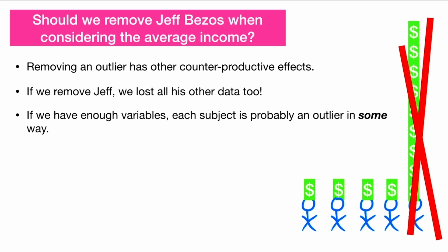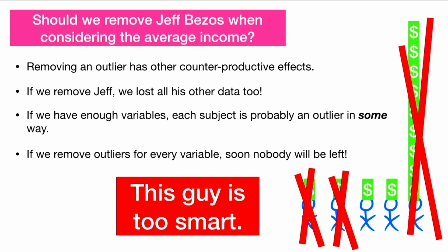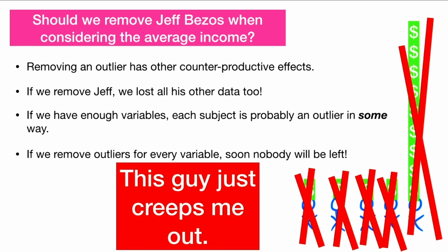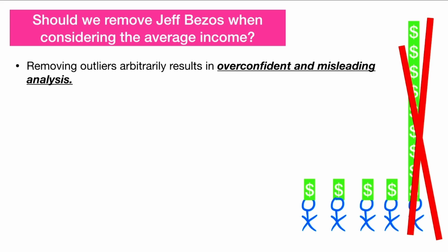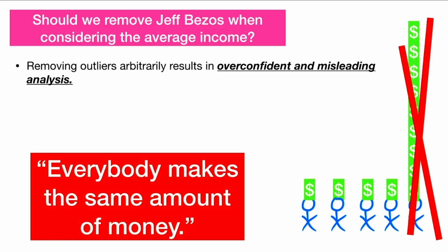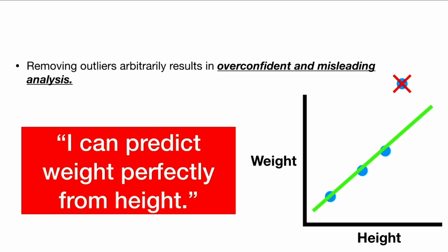There are also other downsides to removing outliers. If we have enough variables, each subject is probably an outlier in some way — you are all special in your own unique way. This guy maybe is too short, this guy is too smart, this guy has big feet, and this guy just creeps me out. And now we've removed our entire dataset. So you should really have a good reason for removing outliers before doing it. Removing outliers arbitrarily results in overconfident and misleading analysis. If we just remove Jeff Bezos, we would conclude that everybody makes the same amount of money. If we remove the giant, we would say everybody is the exact same height. And if we were trying to understand the relationship between height and weight and removed an outlier, we would falsely claim to predict weight perfectly from height.